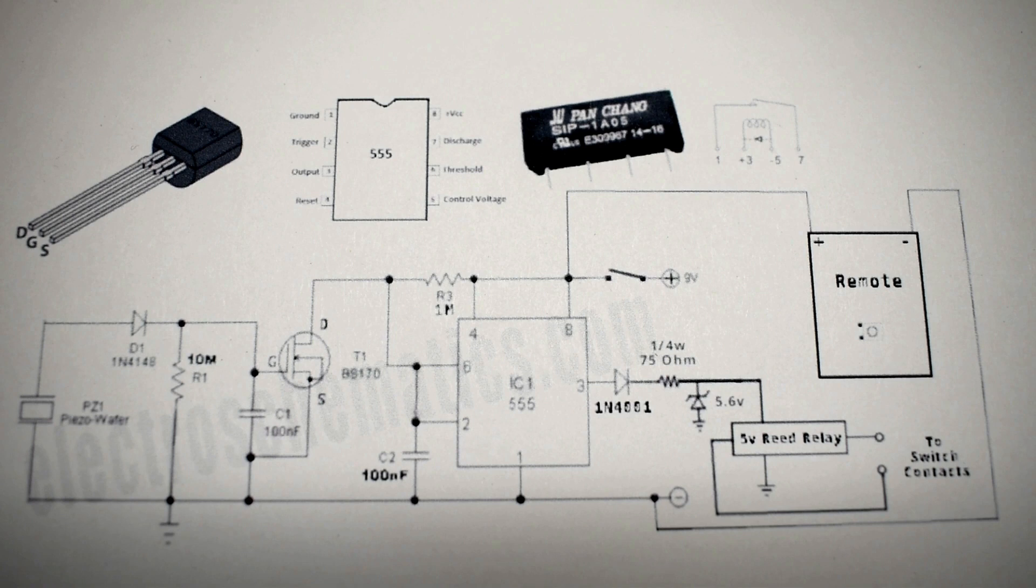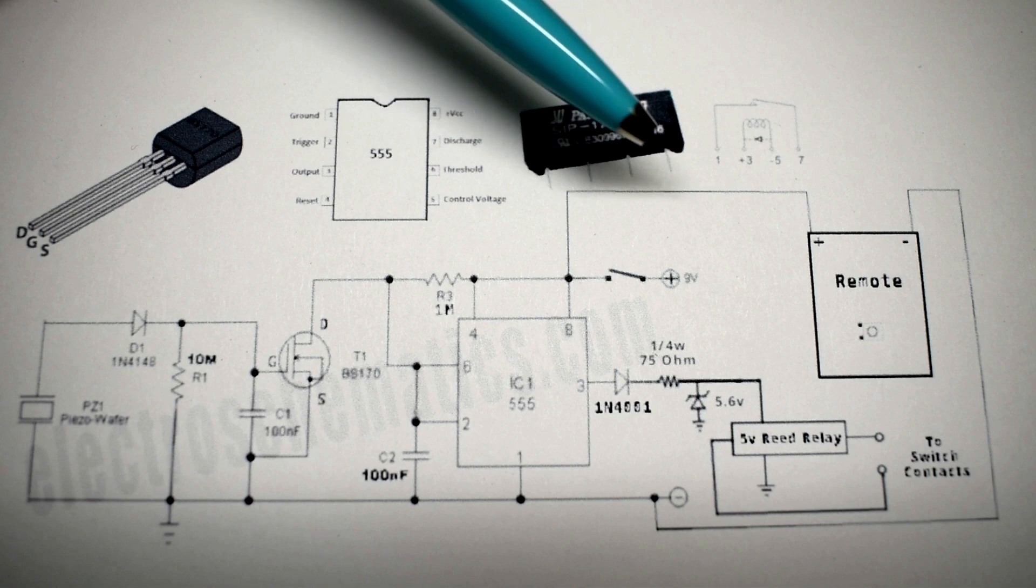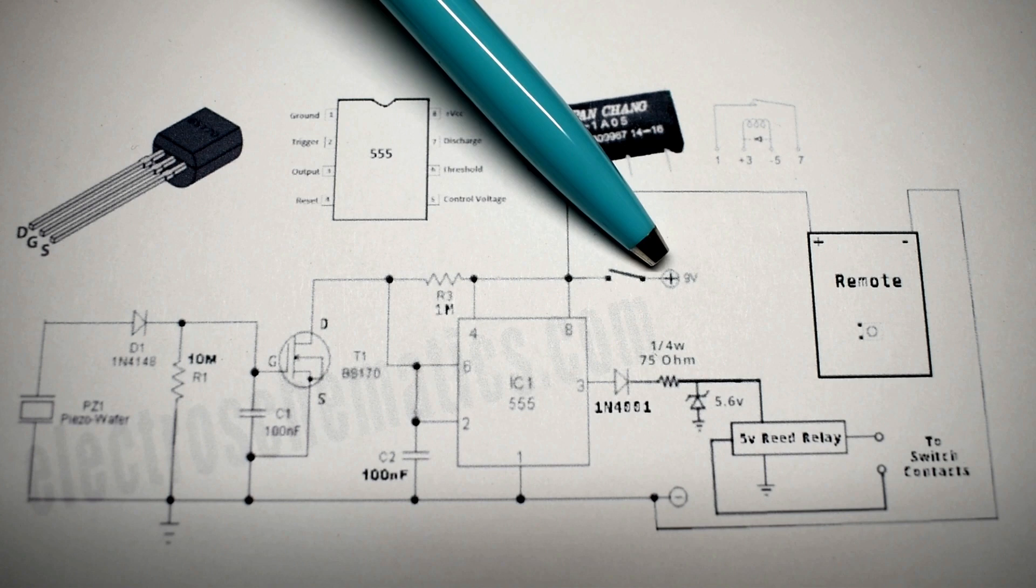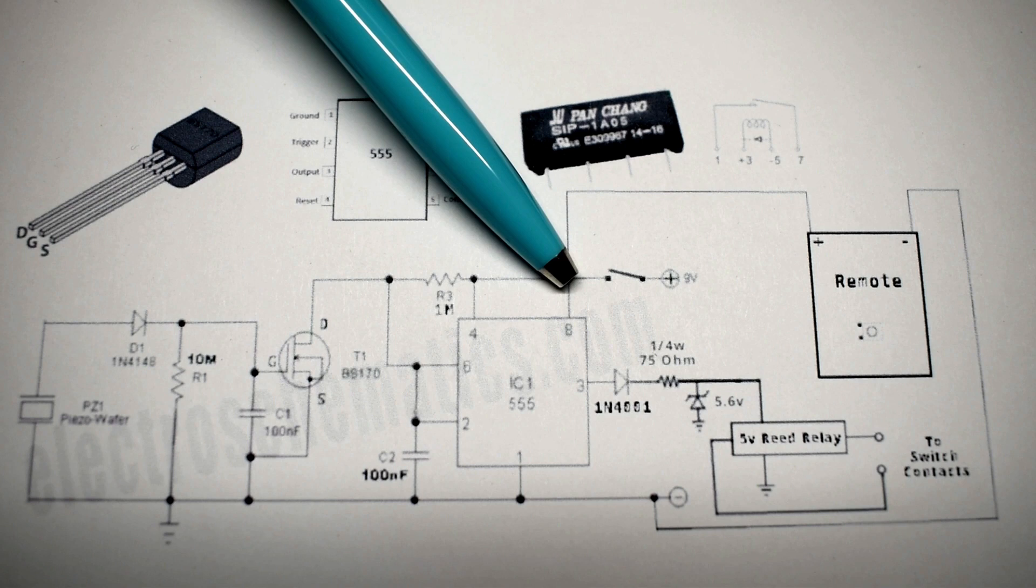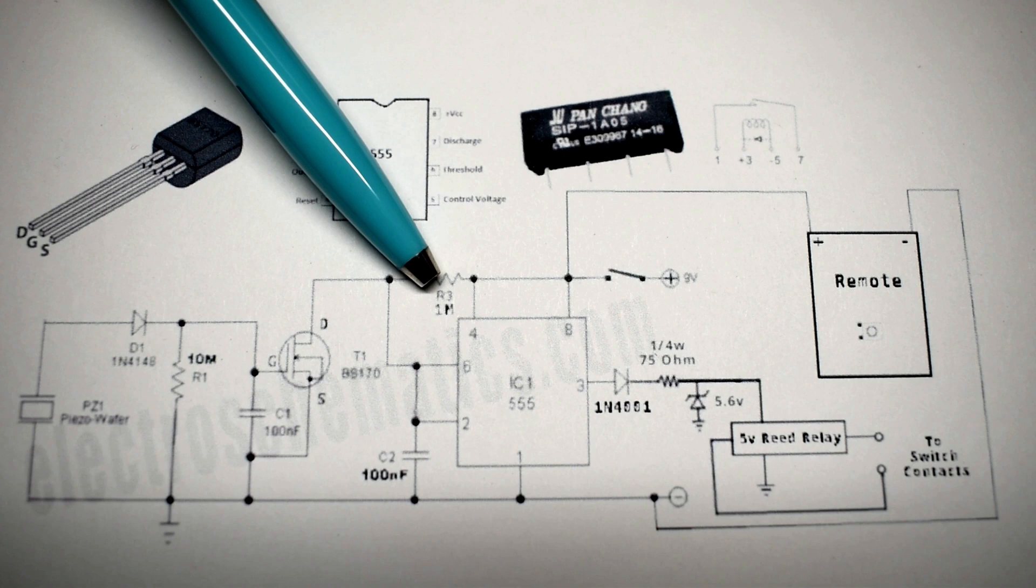Over here, you can see the ground sign. That just means everywhere on the circuit that you see it, it's all going to be connected to battery negative. Over here at the top, you have your battery connection. That's your positive and your negative. There's an on-off switch, and it goes into pins 4 and 8 on the integrated circuit.